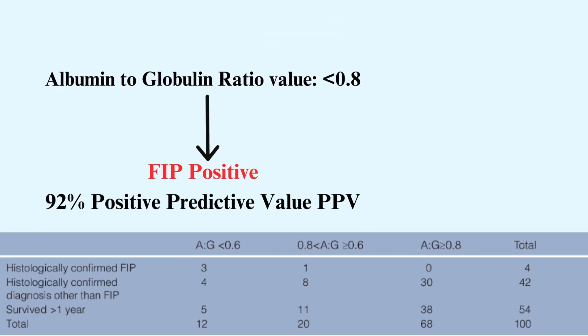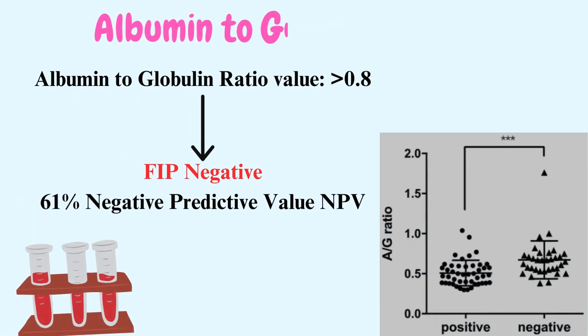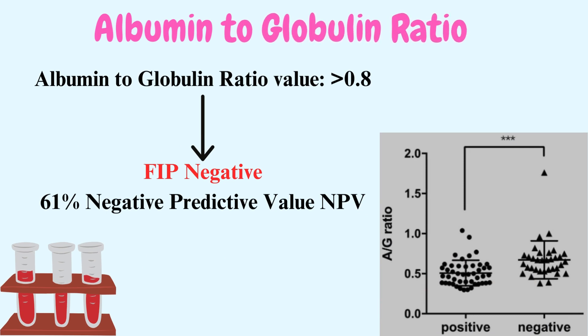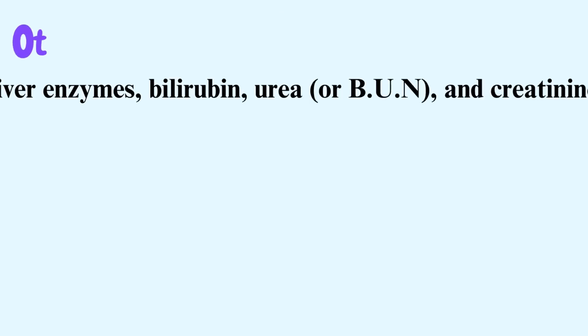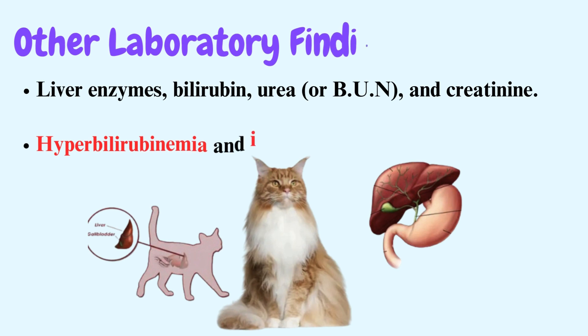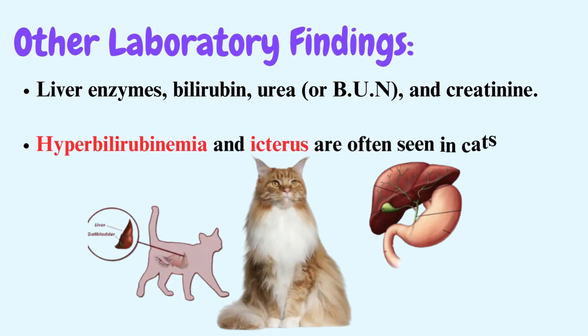If the albumin to globulin ratio is higher than 0.8, the cat likely does not have FIP — 61% negative predictive value (NPV). Other laboratory parameters including liver enzymes, bilirubin, urea or BUN, and creatinine should also be assessed. Hyperbilirubinemia and icterus are often seen in cats with FIP.